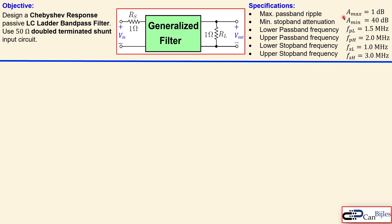The specifications are the following. The maximum passband ripple must be A_max = 1 dB. The minimum stopband attenuation must be 40 dB. The lower passband frequency is 1.5 MHz. The upper passband frequency is 2 MHz. The lower stopband frequency is 1 MHz, and the upper stopband frequency is 3 MHz. So we will need to achieve these specifications.